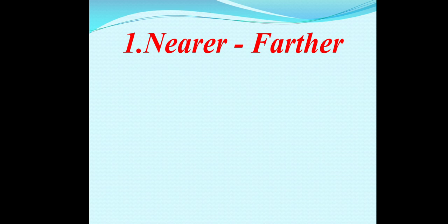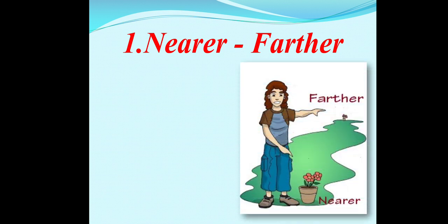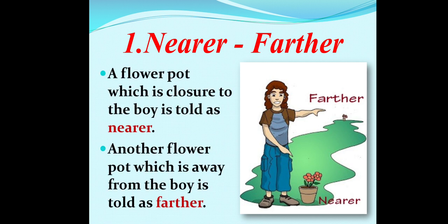The first one is nearer and farther. Dear student, observe this picture carefully. There are two flower pots. In the picture, a flower pot which is closer to the boy is told as nearer. And the flower pot which is away from the boy is told as farther.